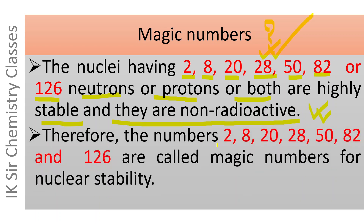Therefore, the numbers 2, 8, 20, 28, 50, 82, and 126 are called magic numbers for nuclear stability. This is because if the number of neutrons or protons in a nucleus touches these numbers, the nucleus becomes highly stable — and this is why these numbers are called magic numbers.